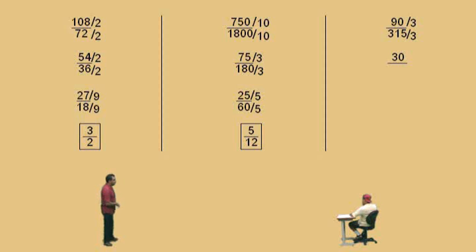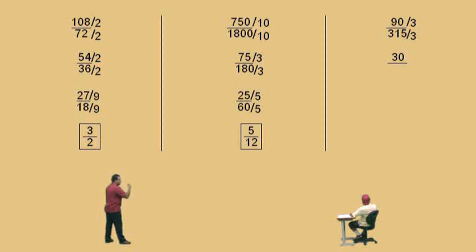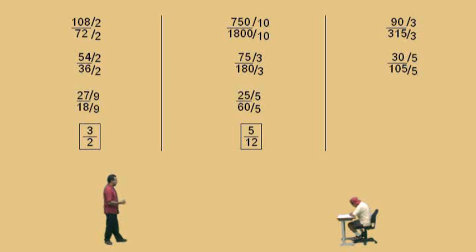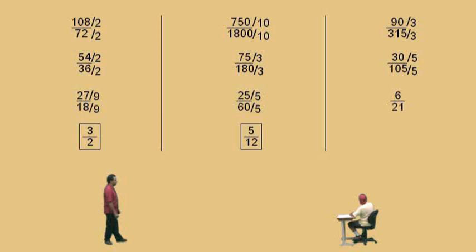Professor Perez: That is always true. So, Charlie, 315 divided by 3. What's 300 divided by 3? Charlie: 100. Okay. So what's 315 divided by 3? Charlie: 105. Professor Perez: Very nice there, Charlie. Now, 30 divided by 5 is what? Charlie: 6. Okay. Now, 100 divided by 5 is 20, so 105 divided by 5 is what? Charlie: 21. Professor Perez: 21.